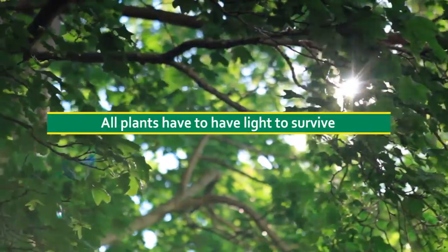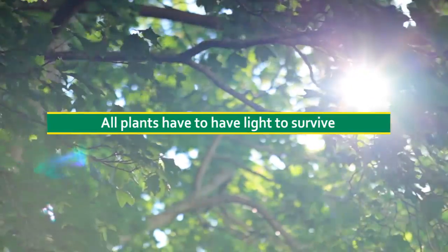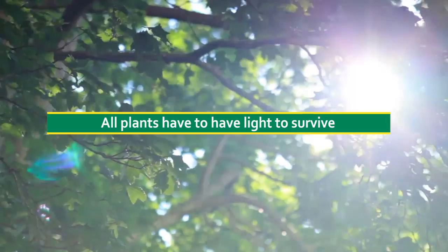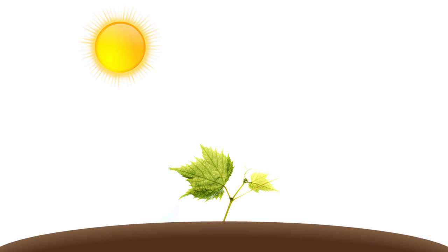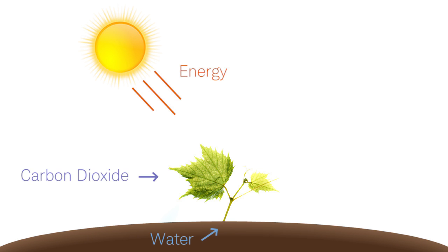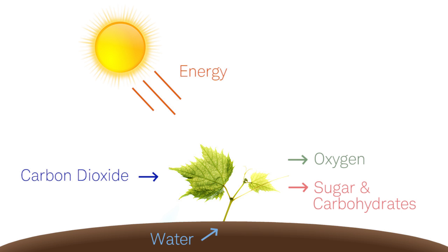All plants have to have light to survive. If you remember back to your fifth grade science class, I'm sure your teacher taught you about photosynthesis. It's the process where plants take energy — light energy from the sun — and with the building blocks of atoms and molecules around them, turn them into sugars and carbohydrates.